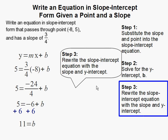Step 3. Rewrite the slope-intercept equation with the slope and the y-intercept. Now that we have the y-intercept which is b and our slope which is m we simply substitute them back into the slope-intercept equation. 3 fourths goes in for m and 11 goes in for b.